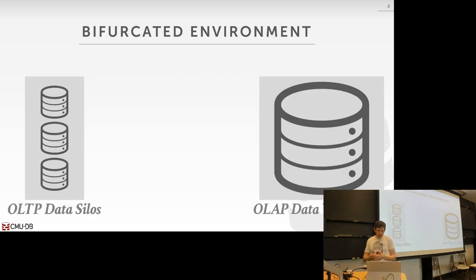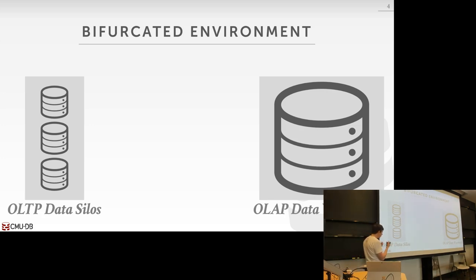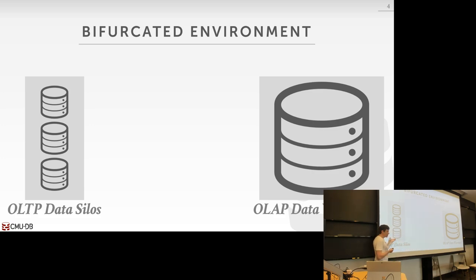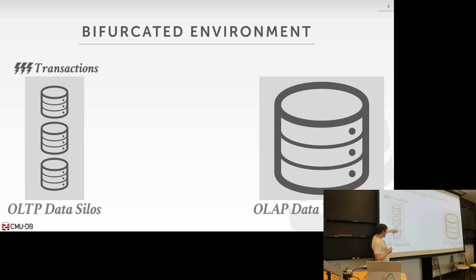And then there's Hybrid Transaction Analytical Processing — HTAP workloads — a buzzword that Gartner invented a few years ago, describing database systems that try to do both. A typical setup you'll see often has front-end OLTP databases and a giant back-end data warehouse. These are sometimes called data silos because you can do a bunch of updates into one database instance — whether it's single node or distributed, it's a single logical database — but they don't really communicate with each other. Each one is sort of an island by itself.